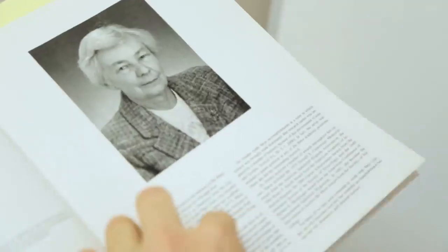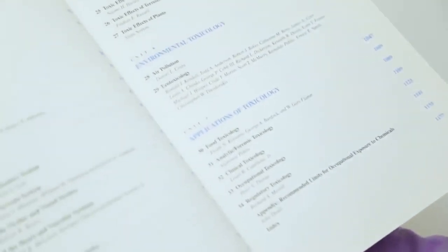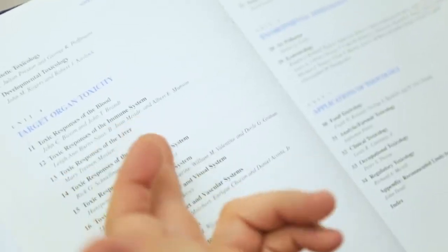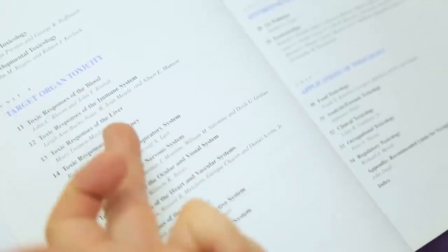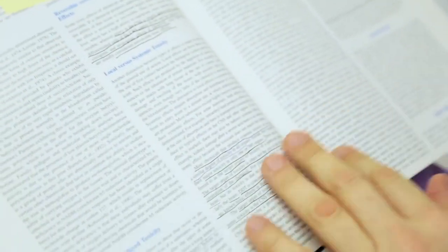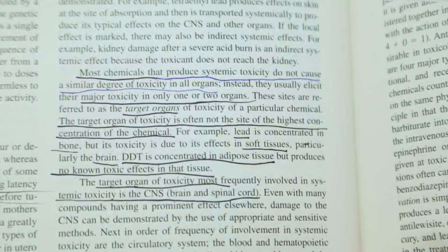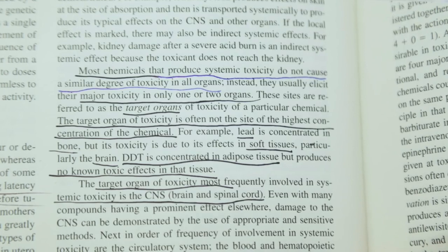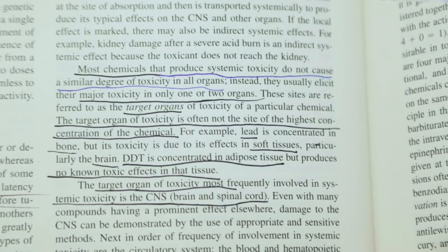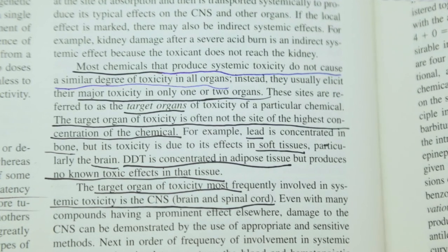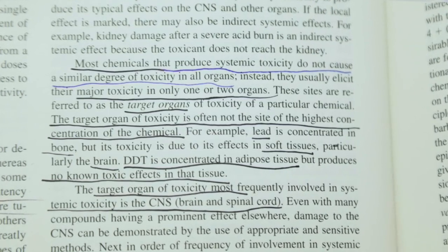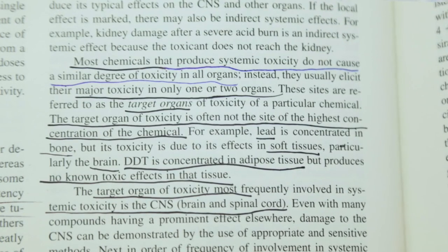So this is called the basic science of poisons. These are all the different chemicals that a person is exposed to, pesticides, herbicides, and it shows you the effects it has on the body, the diseases it creates, if it's accumulated in the kidney or the liver or the respiratory tract or the skin. So this is interesting. It says that most chemicals that produce systemic toxicity do not cause a similar degree of toxicity in all organs. Instead, they usually elicit their major toxicity in only one or two organs.